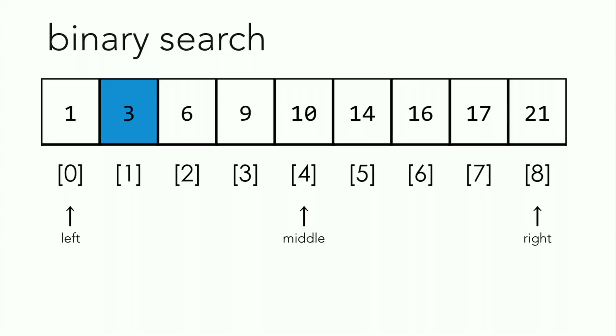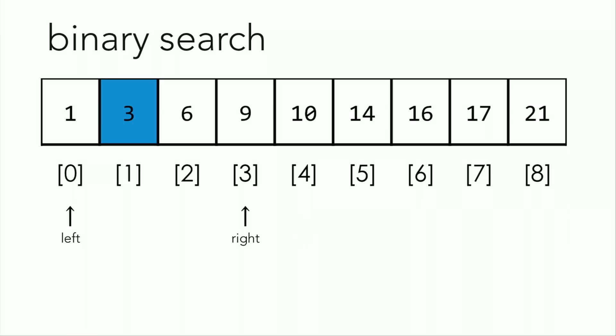The way that binary search works is that we compare the middle value of the array to the needle, much like how we opened a phone book to the middle page in week 0. After comparing the middle value to the needle, you can discard either the left or the right half of the array by tightening your bounds. In this case, since 3 (the needle) is less than 10 (the middle value), the right bound can decrease. Try to make your bounds as tight as possible — if the middle value isn't the needle, you don't need to include it in your search, so your right bound can tighten just a tiny bit more, and so on, until you find your needle.